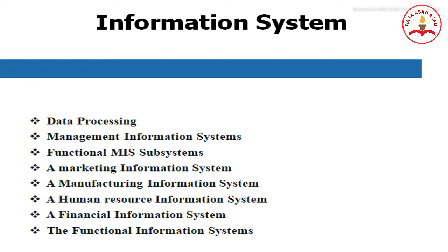Functional management information systems involve many organizations applying the MIS concept to specific functional areas. Terms such as marketing information system, manufacturing information system, and human resource information system indicate the tailoring of MIS to support decision-making in a particular well-defined organizational subunit. The marketing information system is an MIS that provides information to be used by the marketing function, and much of this information is provided by the organization's accounting information system.